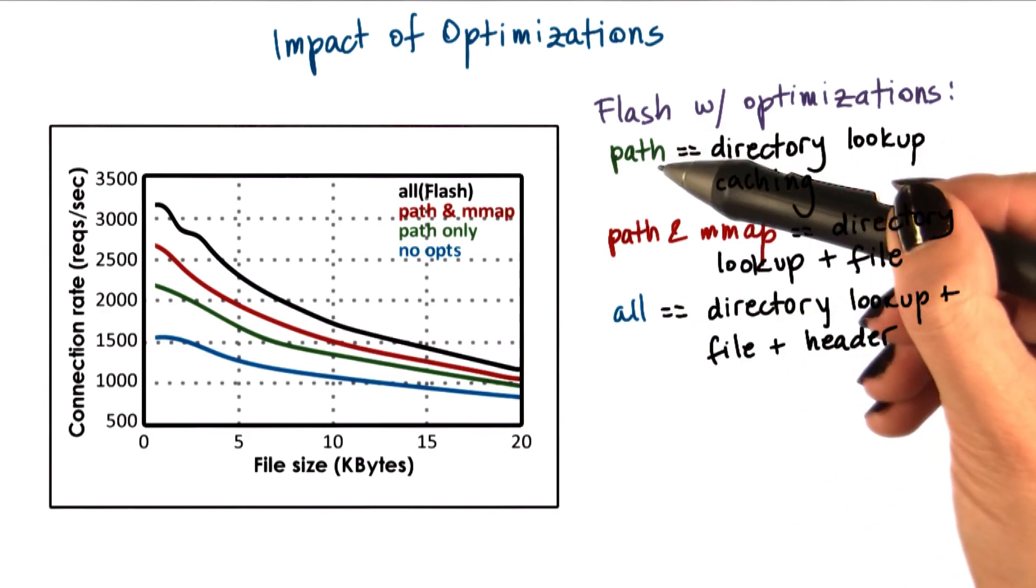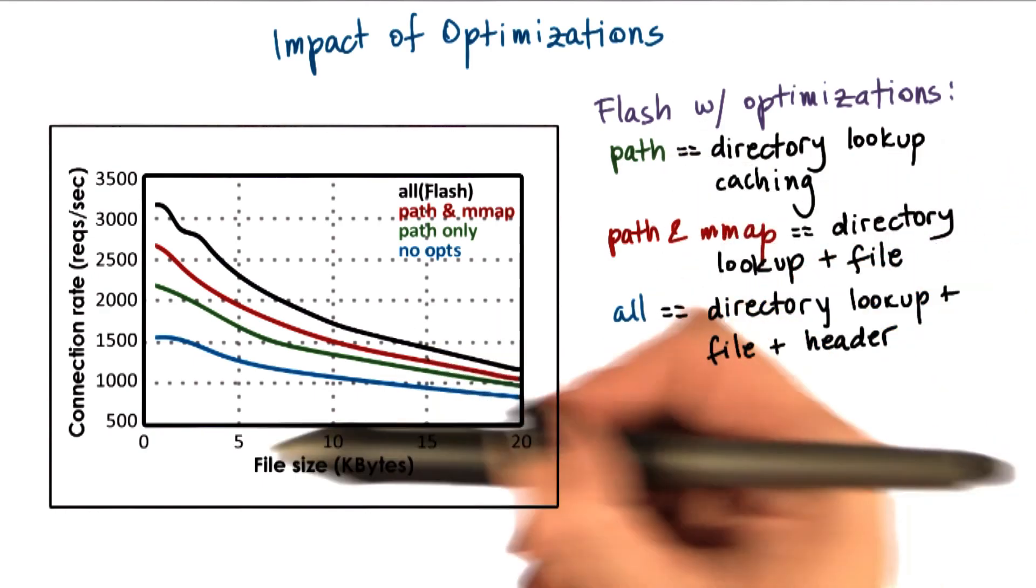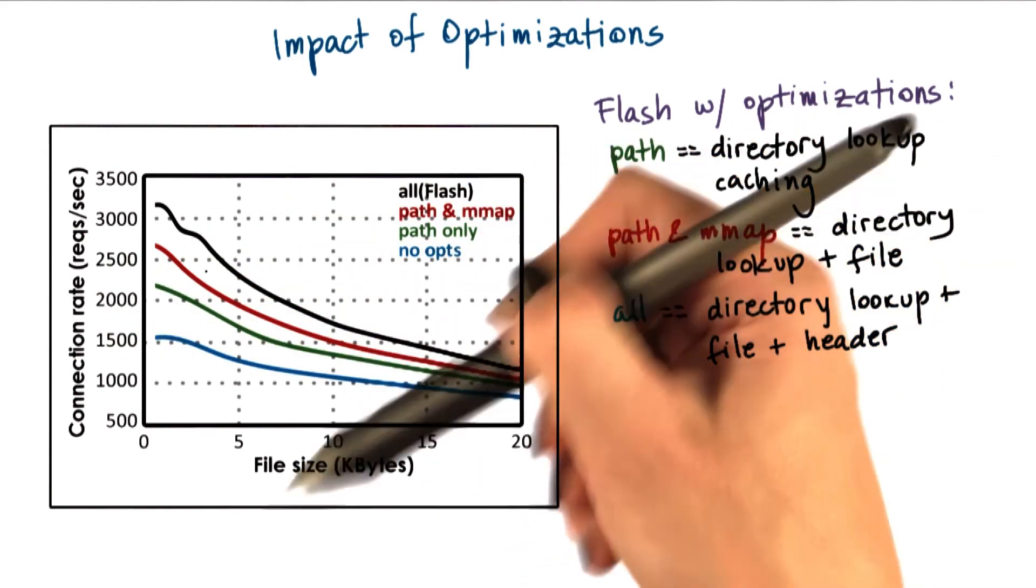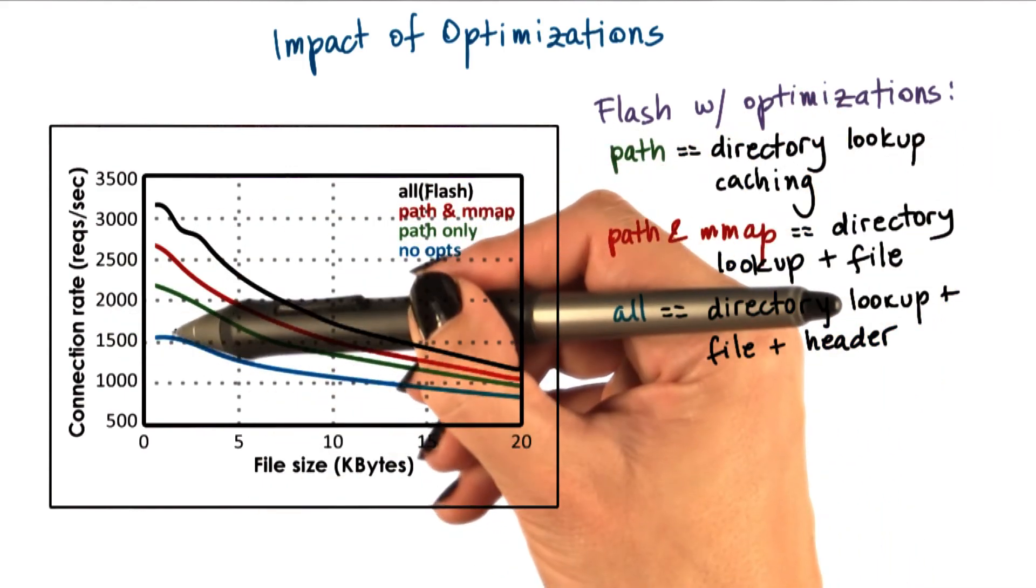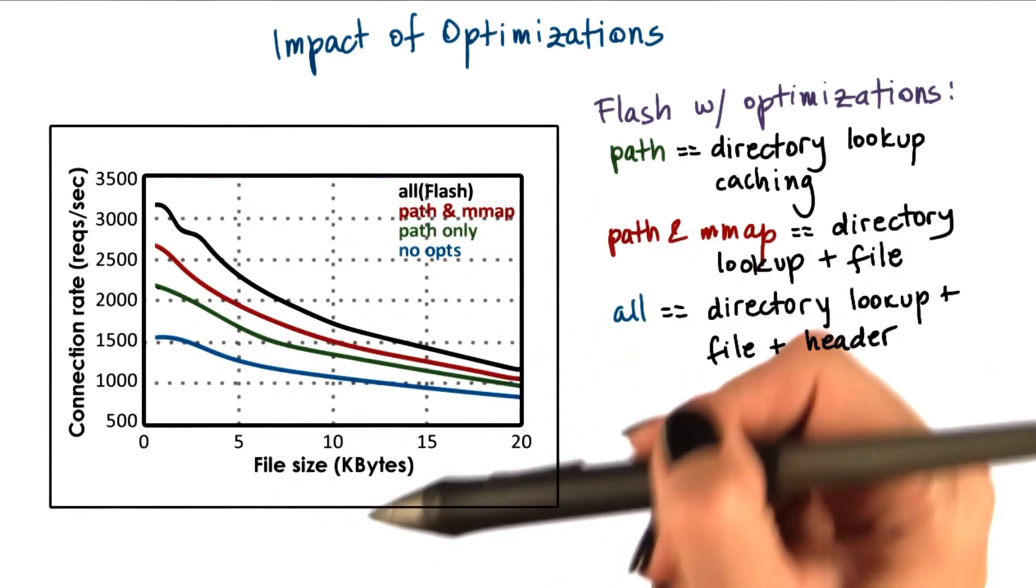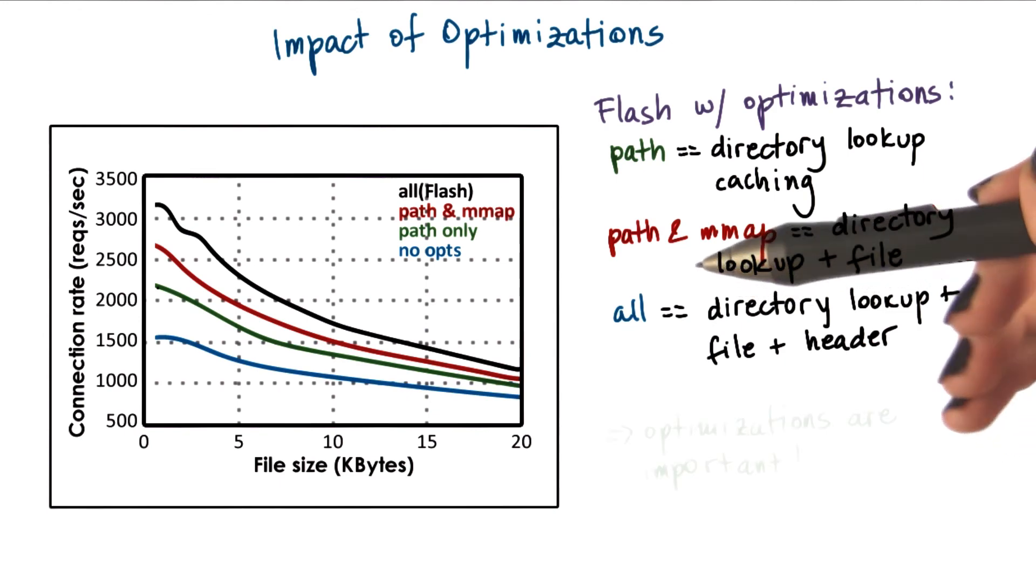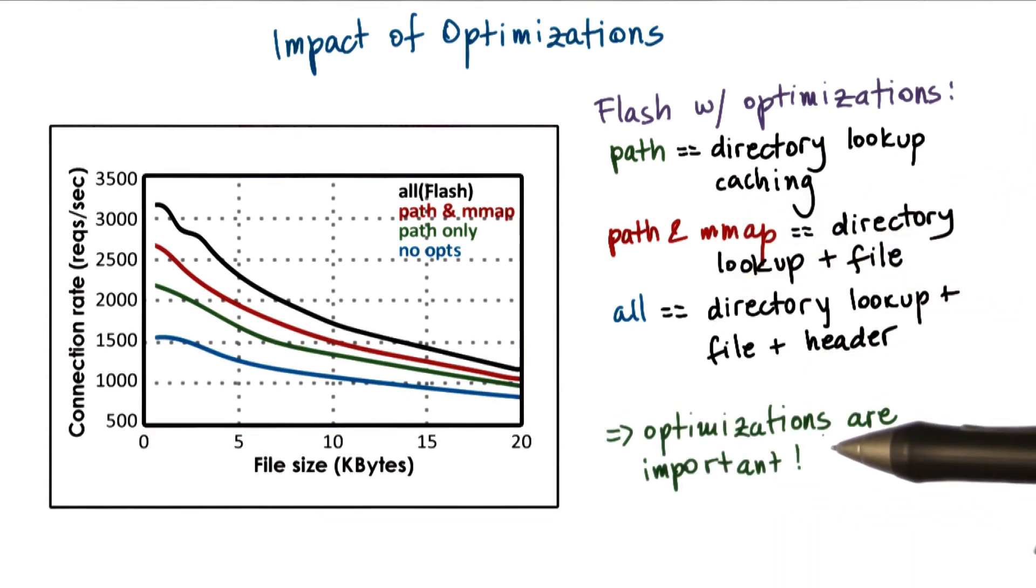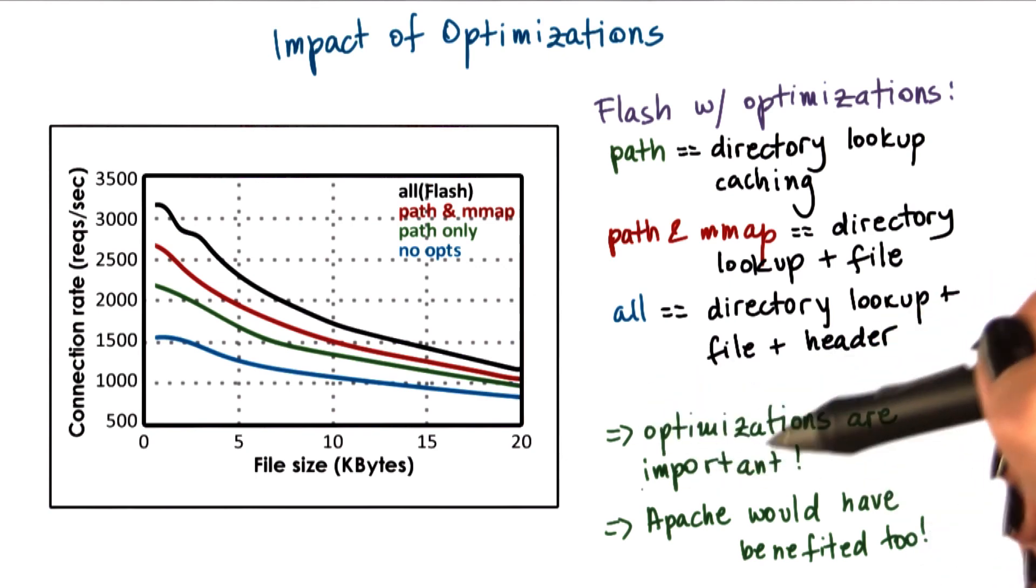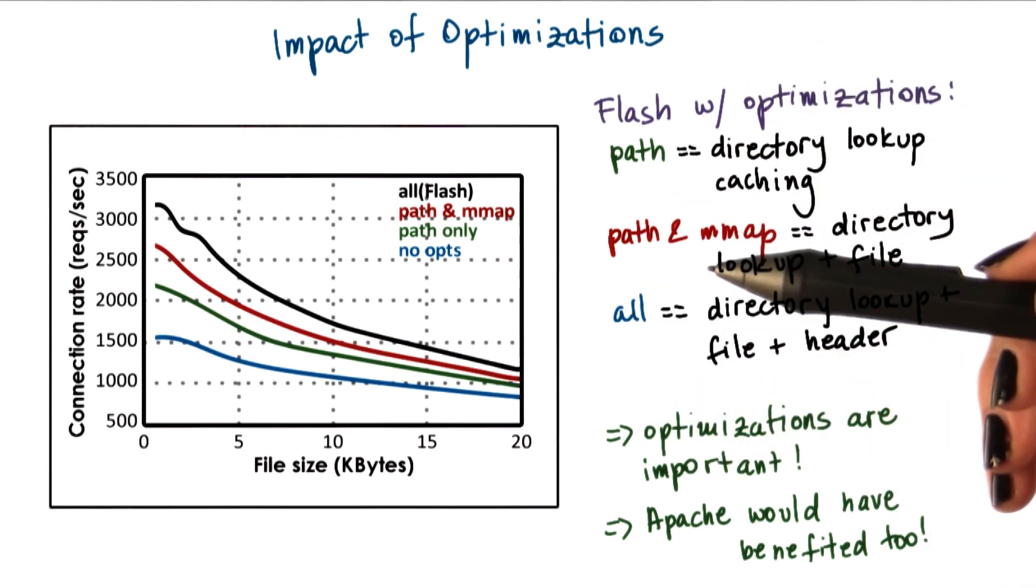And we see that as we add some of the optimizations, this impacts the connection rate. So the performance that can be achieved by the web server significantly improves. We're able to sustain a higher connection rate as we add these optimizations. This tells us two things. First, that these optimizations are indeed very important. And second, they tell us that the performance of Apache would have been also impacted if it had integrated some of the same optimizations as the other implementations.